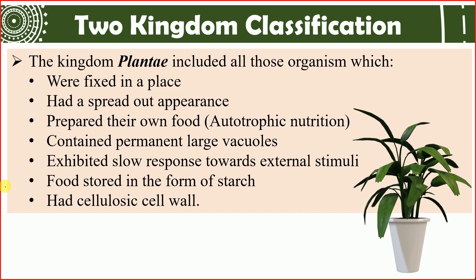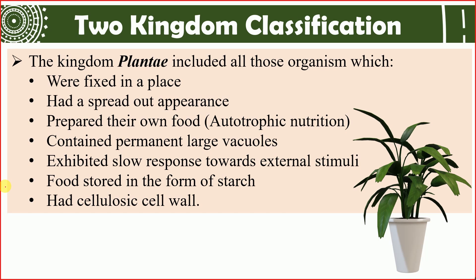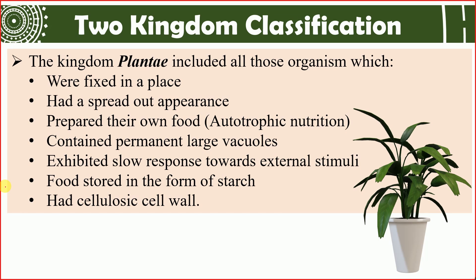Plants prepare their own food through an autotrophic mode of nutrition using chloroplasts with different photosynthetic pigments like chlorophyll a, chlorophyll b, phycobilins, xanthophylls, and carotenoids. These pigments capture light energy to fix carbon dioxide into the form of starch. Plants contain large permanent vacuoles inside their cells and exhibit a very slow response to external stimuli. Food is stored as starch, and they have a cell wall outside the cell membrane.